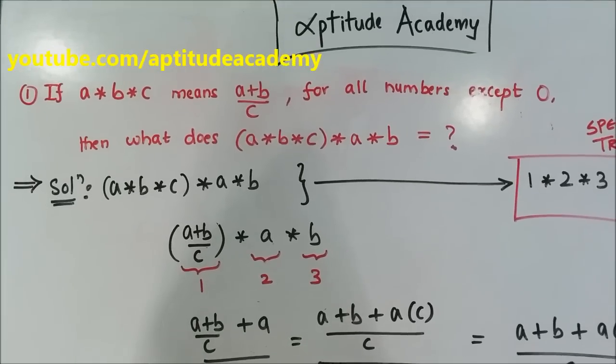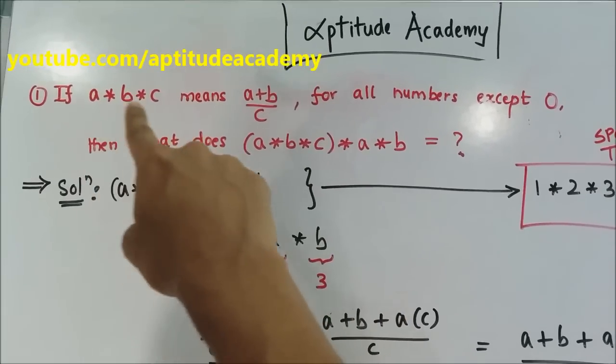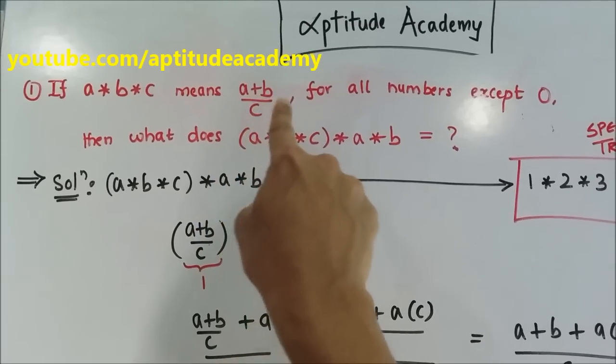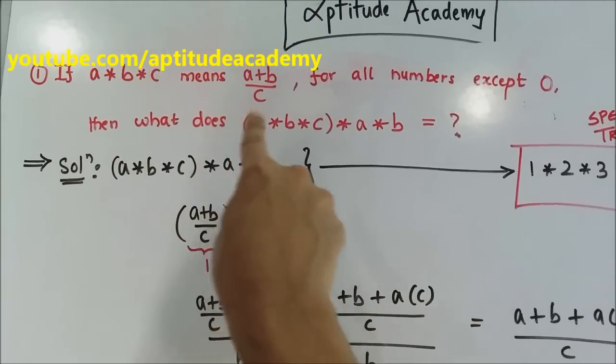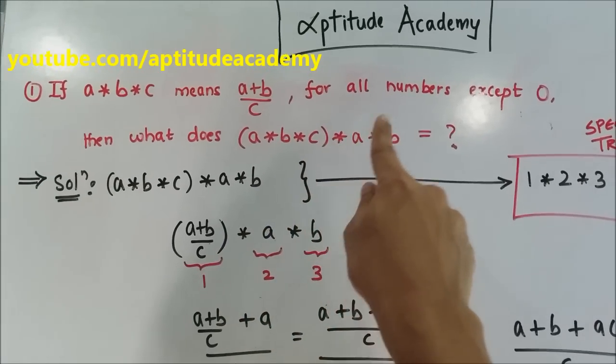Hi, I'm Daniel Souza and welcome to Aptitude Academy. Today's problem: if A into B into C means A plus B by C for all numbers except 0, then what does A into B into C into A into B mean?